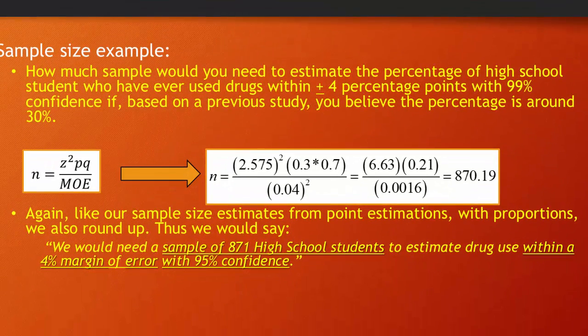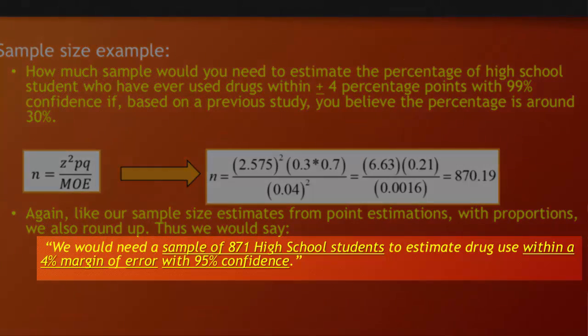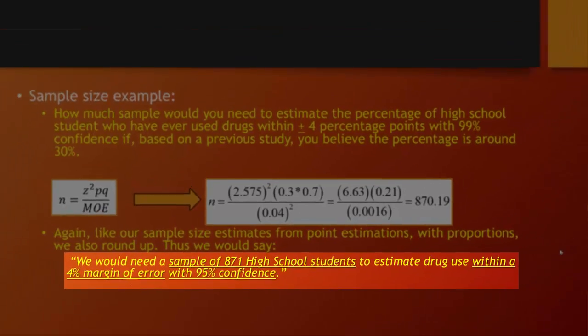Again, like our sample size estimates from point estimation, with proportions, we also round up. Otherwise, we'd be sacrificing either the level of confidence that we have or the margin of error we're willing to tolerate. So, we round up. In this case, 870.19 becomes 871. And finally, we could make a statement where we would need a sample of 871 high school students to estimate drug use within a 4% margin of error with 95% confidence.